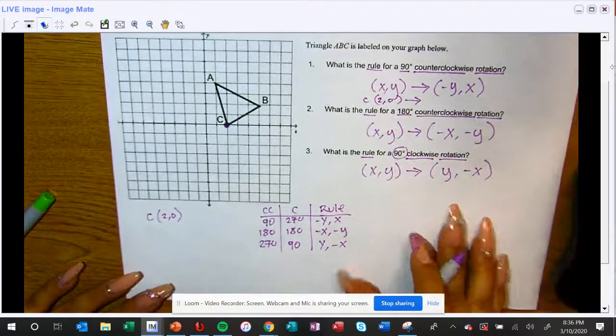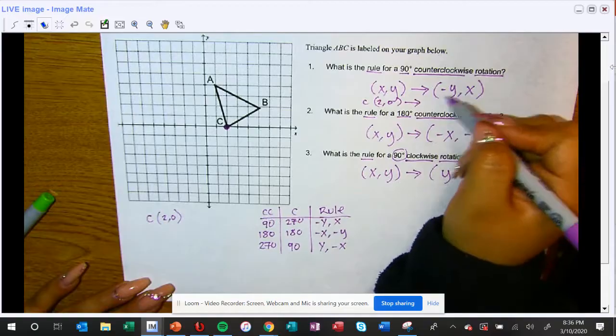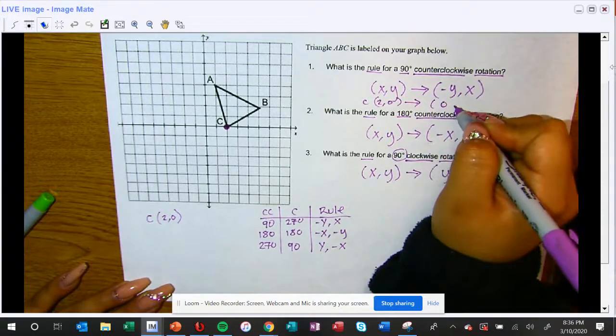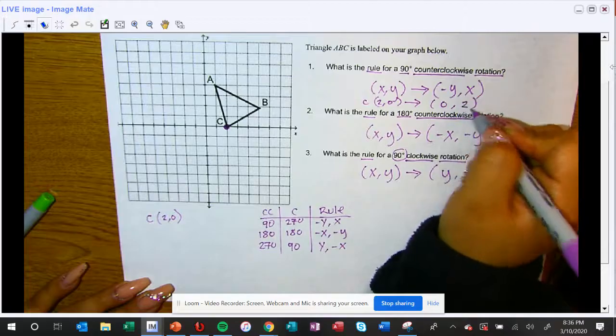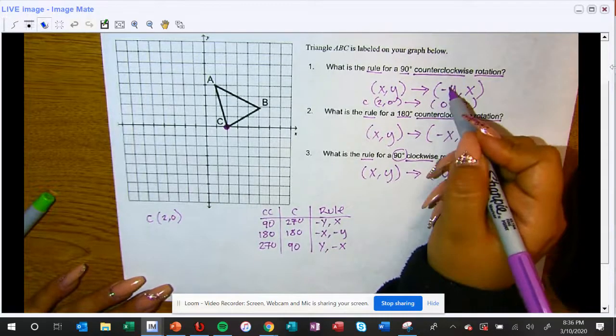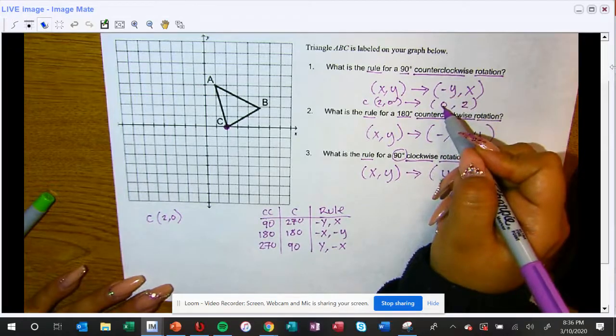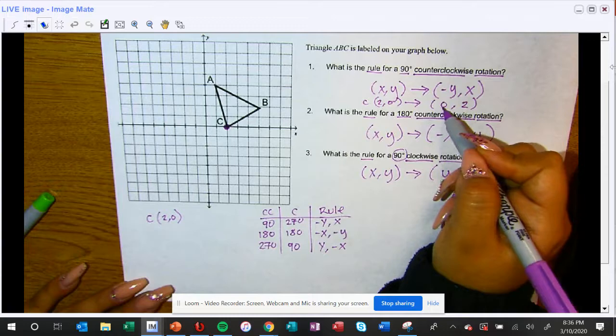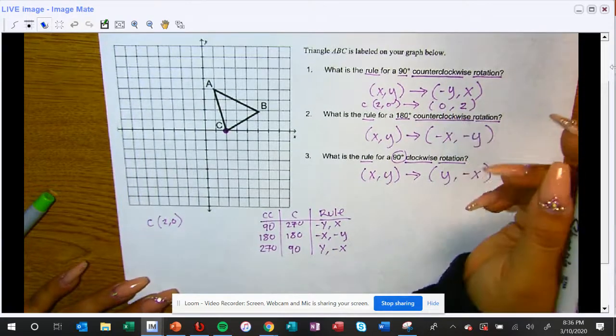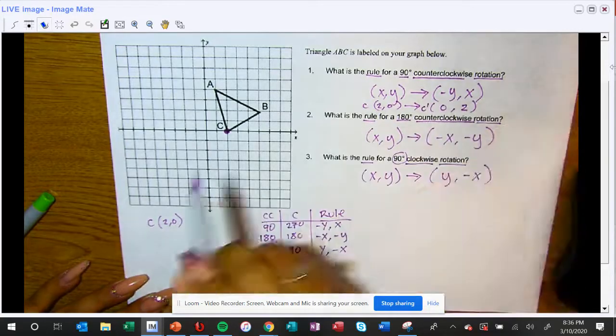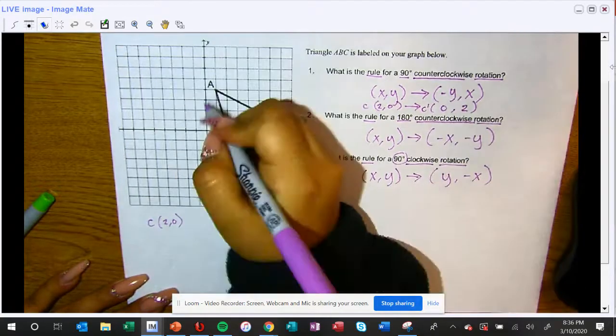Let's say they want us to rotate it using the 90 degree counterclockwise rule. First of all, X and Y are going to switch, and I would put a negative here because that has a negative, but because zero is zero it has no positive or negative I'm not going to change that.